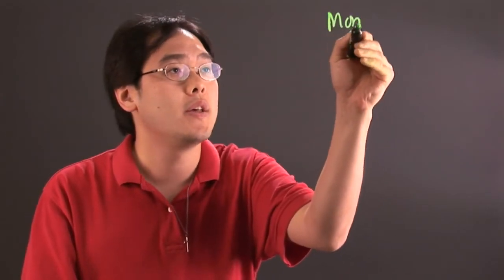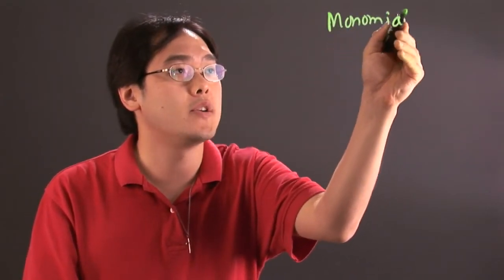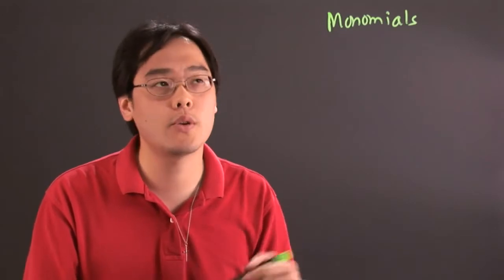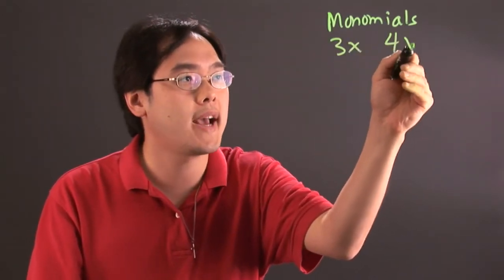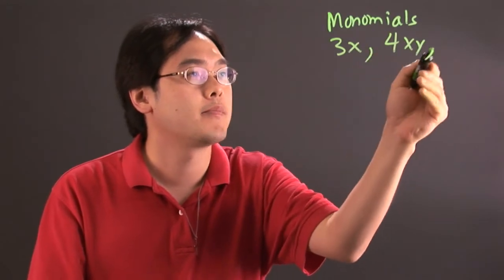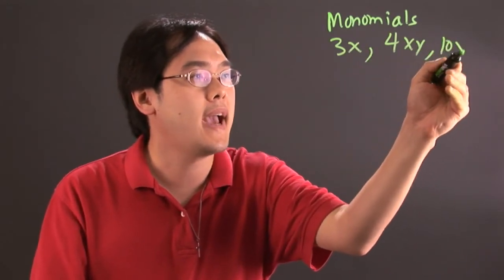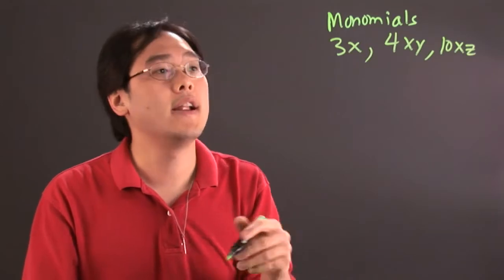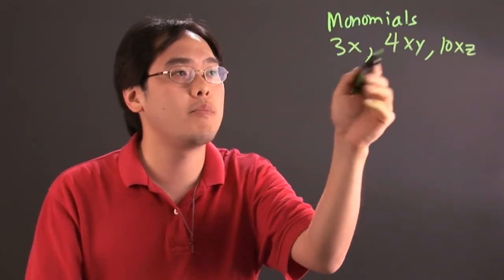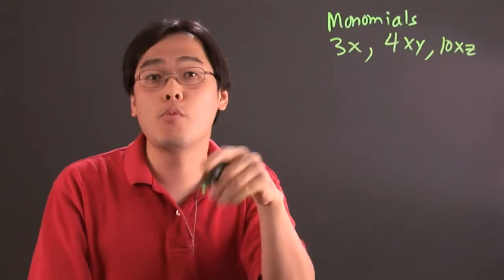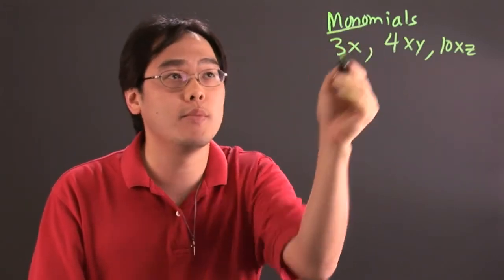Now the important thing to think about when it comes to monomials is they are, just as a friendly reminder, one term polynomials. In other words, you're going to see things like 3x, 4xy, 10xz, things like that. There's no more than one term because the word mono means one term.